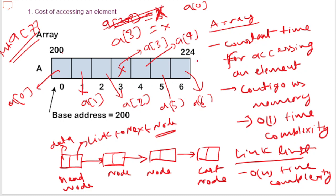So to conclude: the cost of accessing an element in an array is less than in a linked list. Therefore, if there is a requirement for frequently accessing elements, array is a better choice — the access time will be faster with an array.